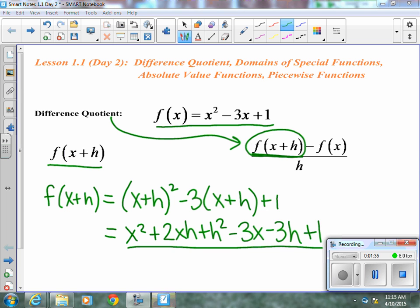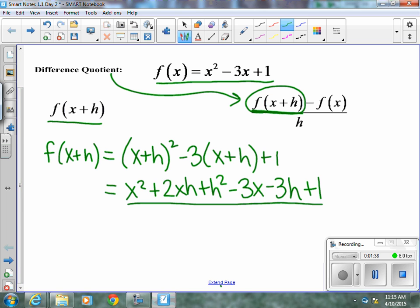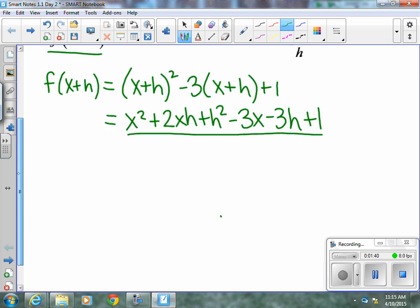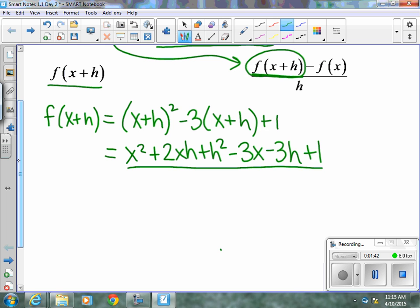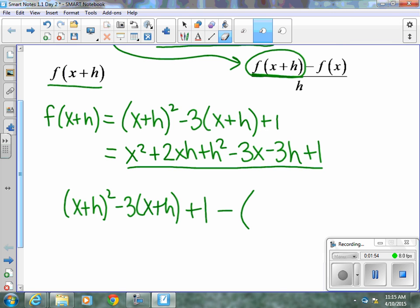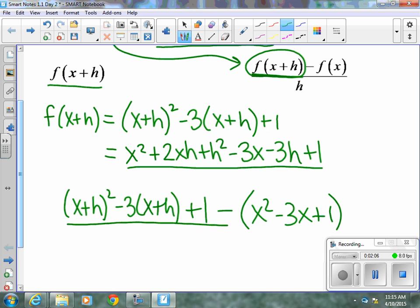So, to go on to do the difference quotient, we would do this whole formula. So, f of x plus h would come first, which is x plus h squared minus 3 times x plus h plus 1, minus f of x. And we are subtracting the whole quantity. They told us what f of x was up at the top. f of x is x squared minus 3x plus 1. And our denominator, as you can see from our difference quotient, is just an h. Not f of h, not anything else, just an h.